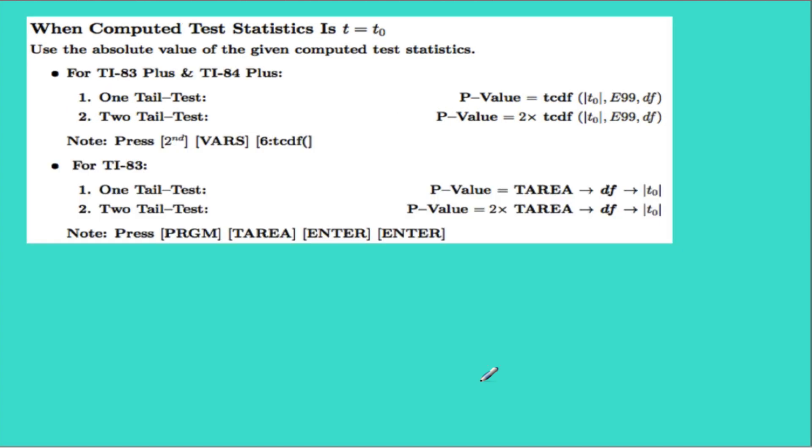Let's look at another case when the computed test statistic is t. Again we're going to use the absolute value of a computed test statistic. In a TI-83 plus or TI-84 plus we can use the function TCDF and that is located under second vars, and then look for TCDF. On TI-83 calculator you can look for the program T area and follow the on-screen steps.